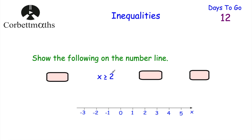For x is greater than or equal to 2: go to 2, and because it's greater than or equal to 2, we draw a shaded-in circle rather than a hollow one. Then draw an arrow to the right, showing all values that are either 2 or greater than 2 would work.